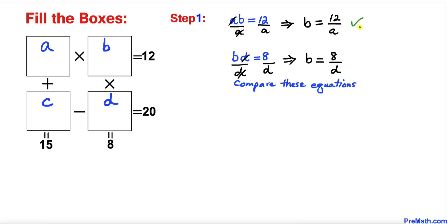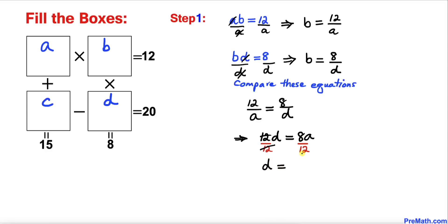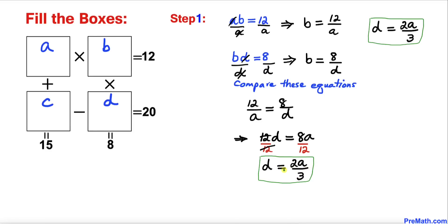Now let's compare these two equations. The left-hand sides are the same, so we can equate the right-hand sides: 12 divided by A equals 8 divided by D. Cross-multiplying gives 12D equals 8A. Dividing both sides by 12, D turns out to be equal to 2A divided by 3.